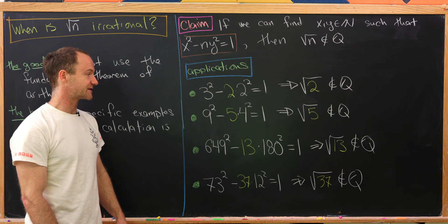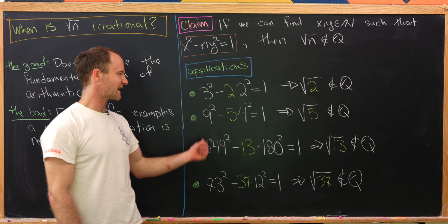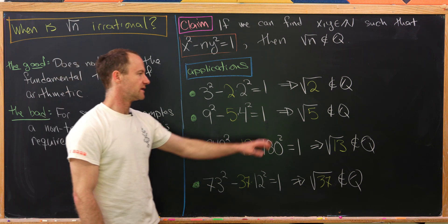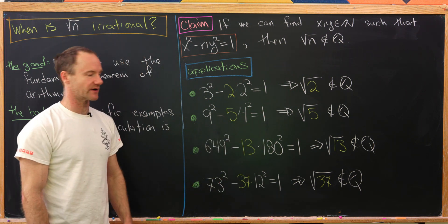Next up, 9 squared minus 5 times 4 squared is 1. That's 81 minus 80. That means that the square root of 5 is irrational.